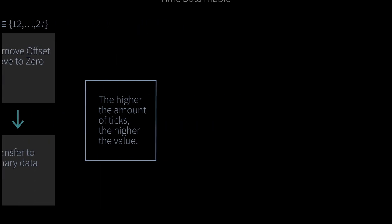First, the measured time for each data nibble is divided by the time per tick. Thus, you receive a number of ticks for the data nibble. Then the offset is shifted by subtracting 12 from the number of ticks. You get a decimal value for the data nibble. This decimal value is finally converted into a binary value.